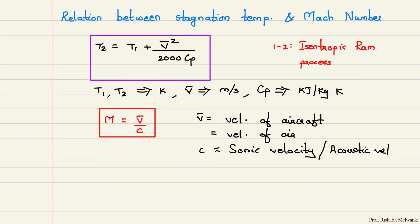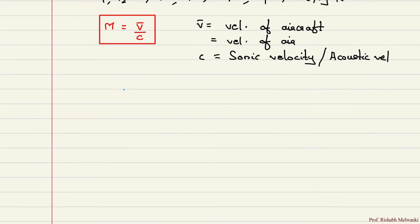We will divide on both sides with T1. So I will write down the equation. Dividing both sides by temperature T1. So what I can get over here: T2 by T1 is equal to